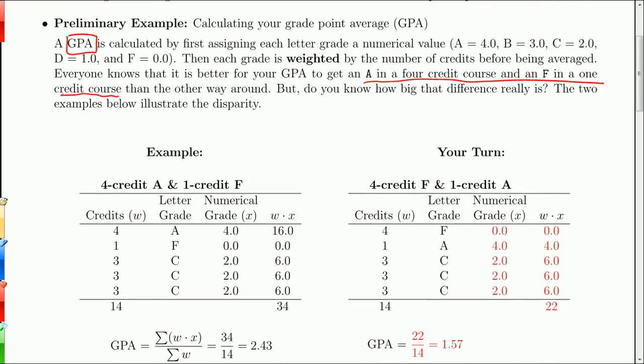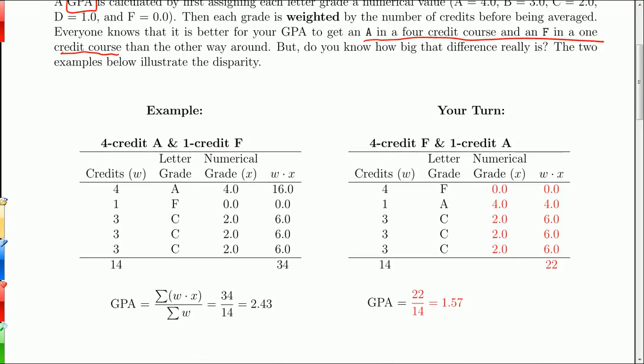So here, I'm going to show you exactly how a GPA is calculated. So suppose this is your report card. A, F, C, C, C, right? And your A was in a four-credit course. Your F was in a one-credit course. And then your C's were in three-credit courses. What you have to do is you switch your letter grades to numerical grades, and A goes to 4.0, and F is zero. And the C's are all twos.